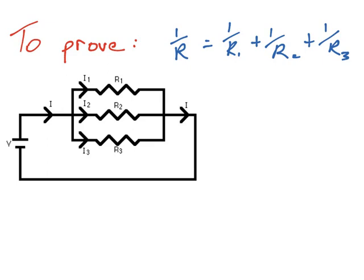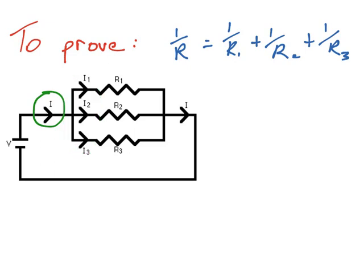If we look at the diagram, we can see that we have a current flowing into the junction called I, and we're going to use the fact that the current flowing in has to equal the three currents that are flowing out of that junction, which are I1, I2, and I3.